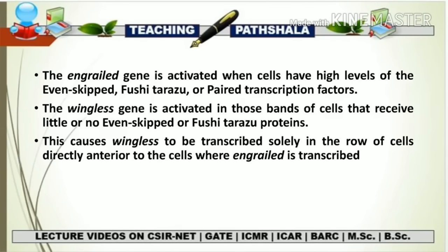This causes the wingless to be transcribed solely in the row of cells directly anterior to the cells where engrailed is transcribed. The meaning of this is that the area where engrailed is expressed is going to give rise to a posterior polarity for a segment and an anterior polarity for a parasegment. But the area where wingless is expressing is going to develop into an anterior polarity of a segment. So if engrailed is deciding the posterior polarity of a segment, then wingless is going to decide the anterior polarity of a segment.